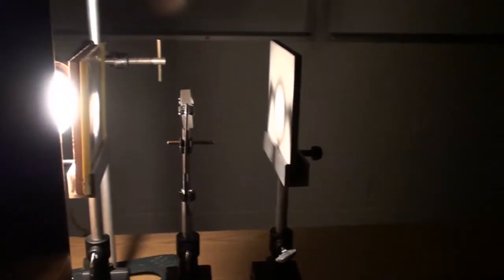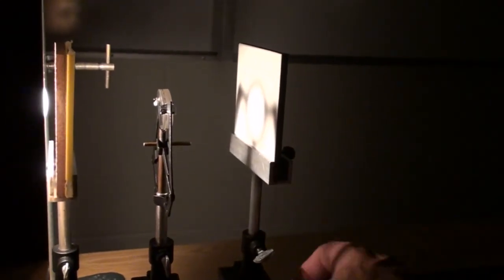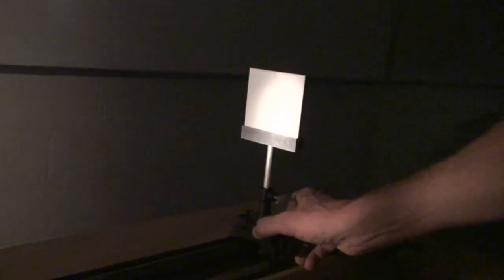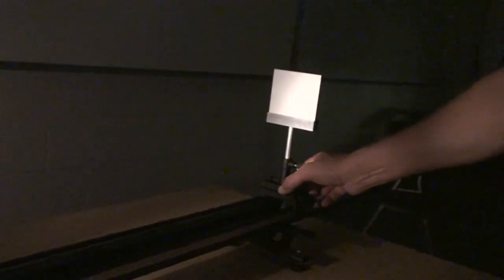Place the object near the zero centimeter mark and the screen at 110 centimeters. Move the lens until a sharp inverted image forms. Record the object position, the lens position, and the screen position.